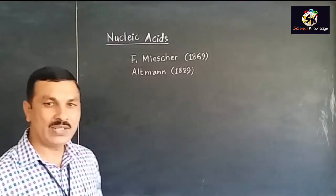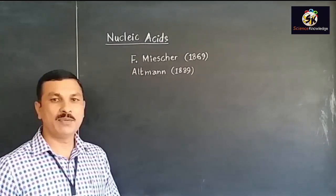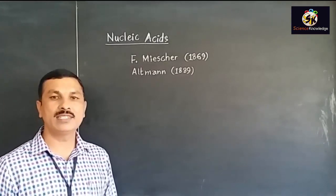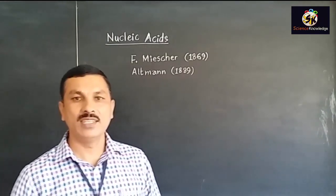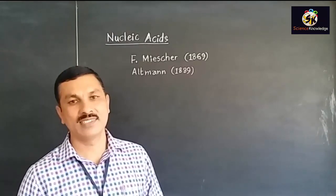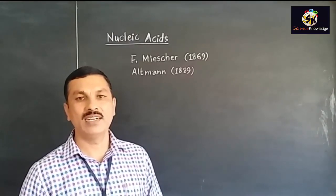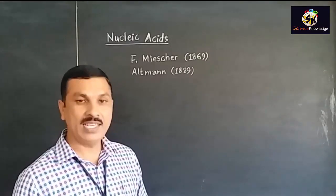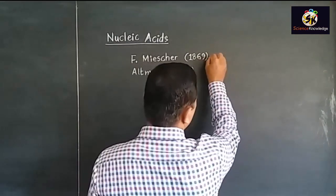Nucleic Acid was first identified by Frederick Miescher in 1869. He studied the nucleus of pus cells and identified a content which is phosphorus-rich, and he named it Nuclein.